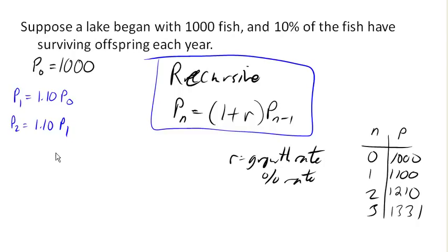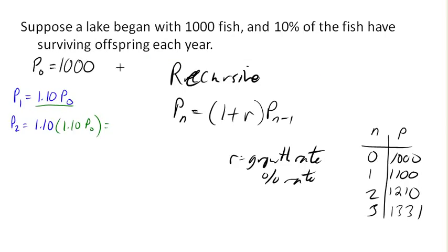But we know what P1 is, right? So let's go ahead and replace P1 with what we know it's equivalent to. P1 is 1.10 times P0. Now can we simplify this at all? Why yes, I can say 1.10 times 1.10 is 1.10 squared times P0.